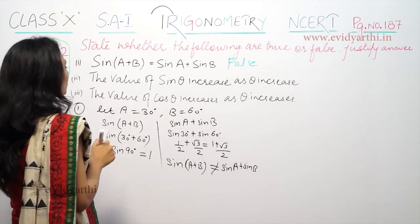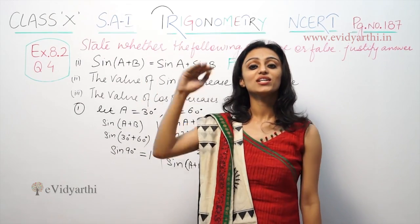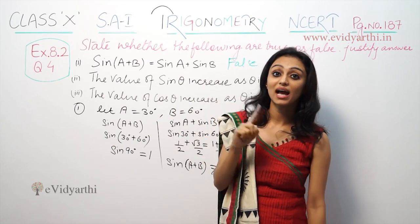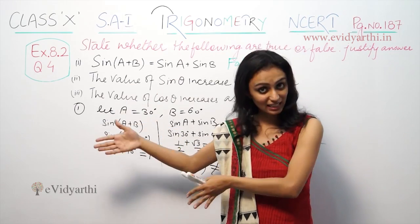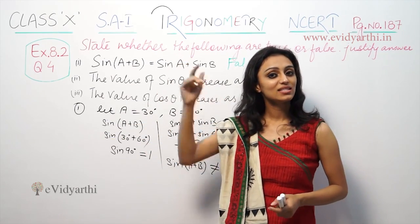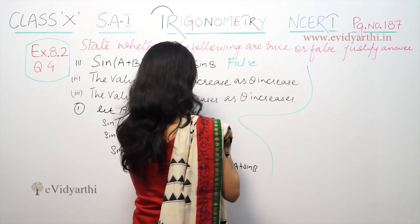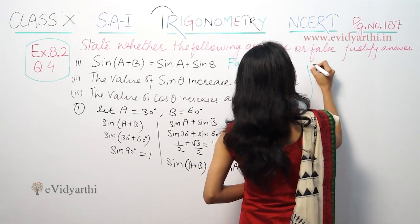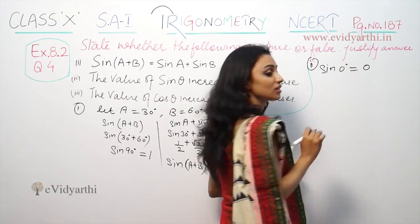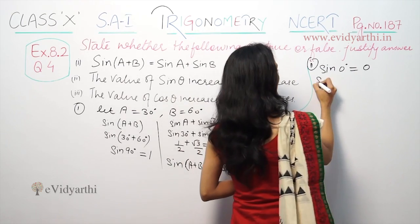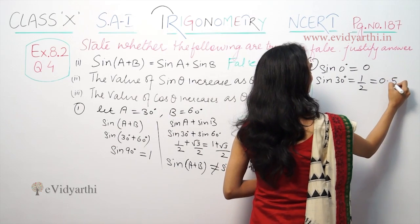Now the second part: the value of sin θ increases as θ increases. As θ increases, our angle goes from 0°, 30°, 45°, 60°, 90°. Sin 0° has value 0. Sin 30° has value 1/2, that means 0.5.